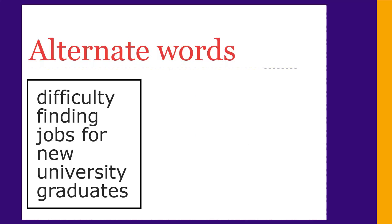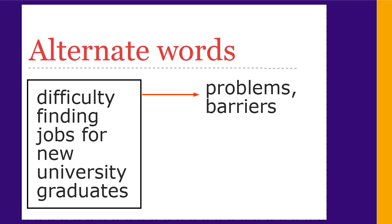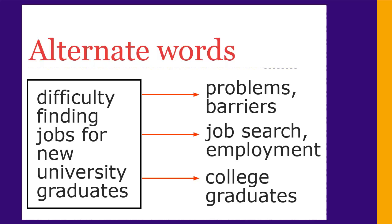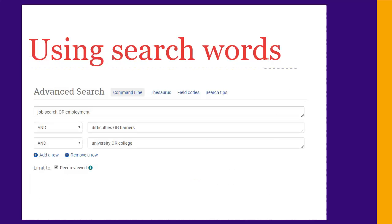Since different people use different terms for the same concept, think of other words people might use to talk about your concepts. In our example, alternate words for difficulty might be problems or barriers. For finding jobs, it could be job search or employment. And for university graduates, one could be college graduates. Once you have your main concepts and alternate words, use them in your search.